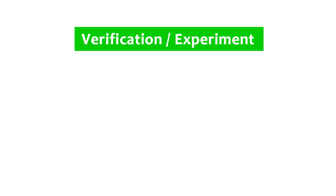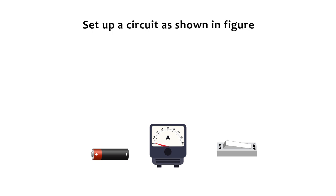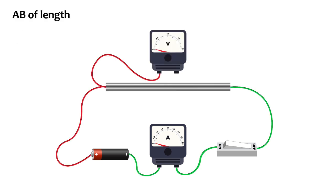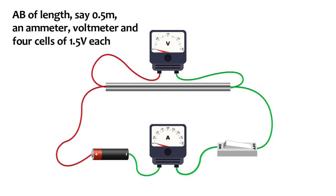Verification or experiment: Set up a circuit as shown in figure. The figure consists of a nichrome wire AB of length, say, 0.5 meters, an ammeter, voltmeter, and four cells of 1.5 volts each.